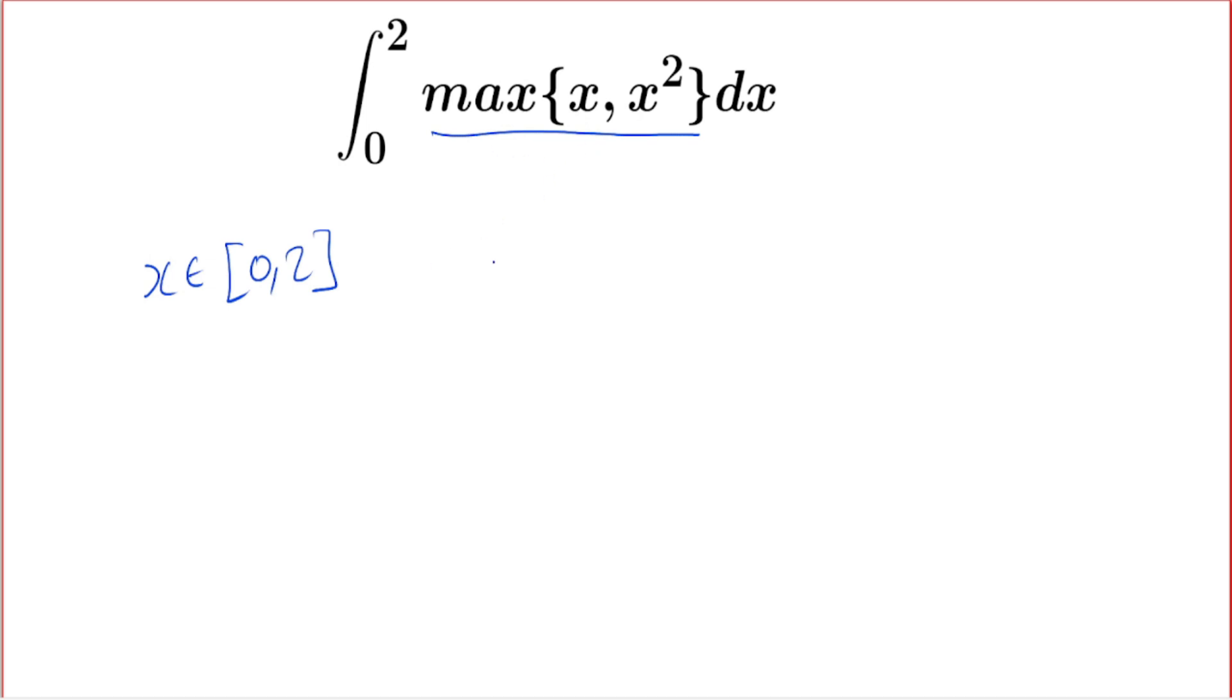Before we find the maximum, let's try to find the point where x and x squared are equal. So we solve x equals x squared, and we get x equals zero and x equals one. Let's put these points on a number line.